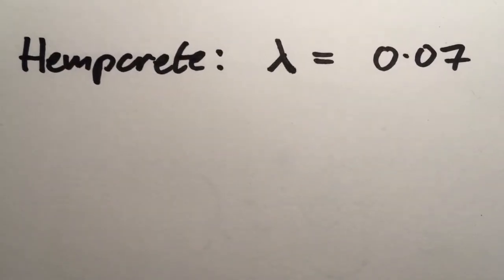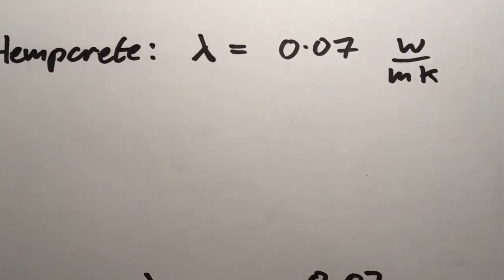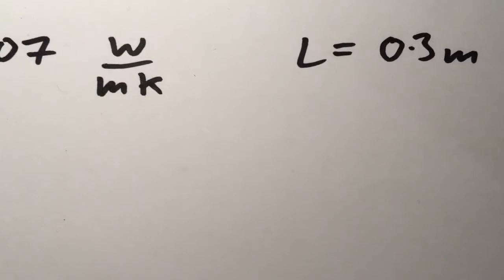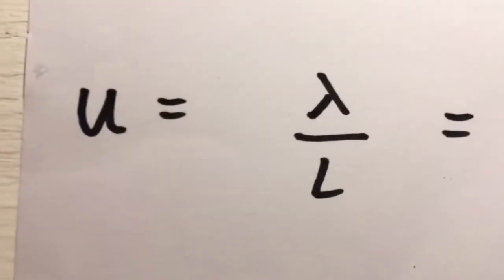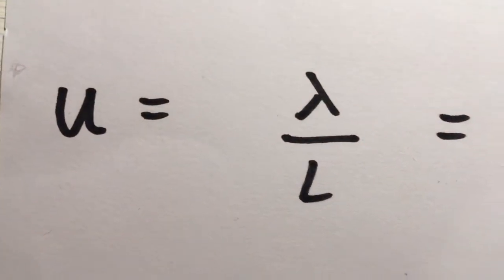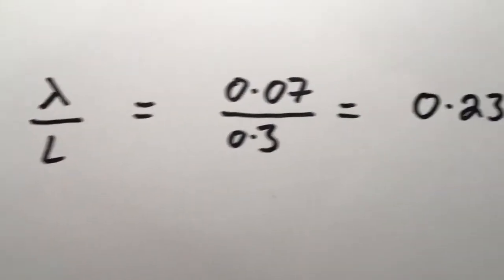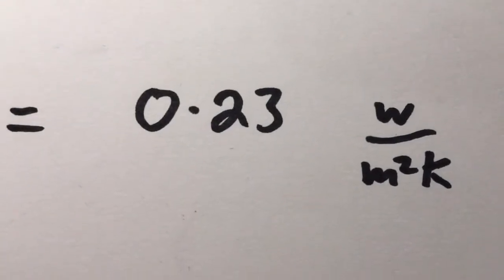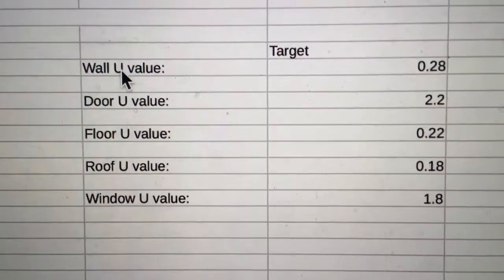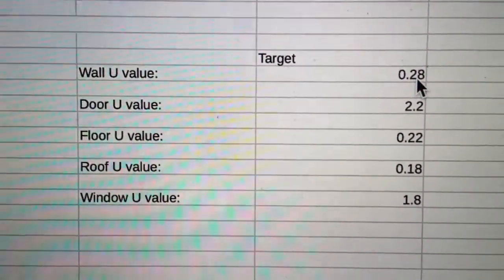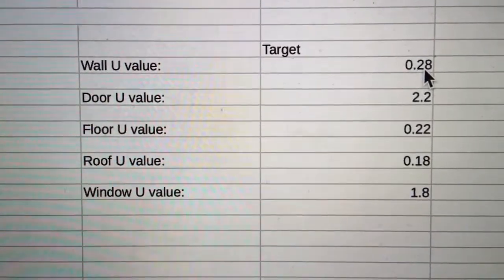So a U-value calculation for a simple hempcrete wall is quite straightforward. For a hempcrete and timber wall, lambda equals 0.07 watts per meter Kelvin. And the wall is 300mm thick, or 0.3 meter. So L is 0.3. U then is lambda over L, or 0.07 over 0.3, which is 0.23 watts per meter squared Kelvin. Going back to the target values, you can see that the number to beat is 0.28 watts per meter squared Kelvin. So the hempcrete wall does this easily.